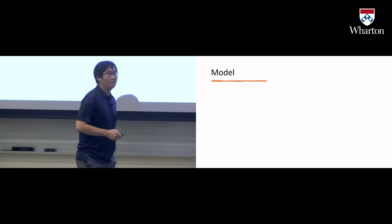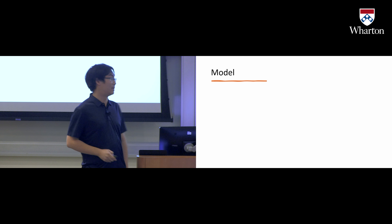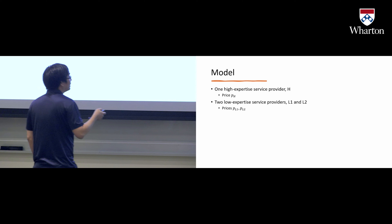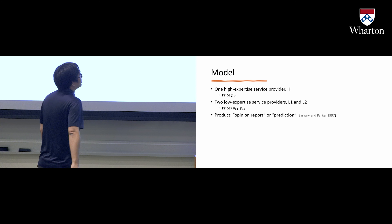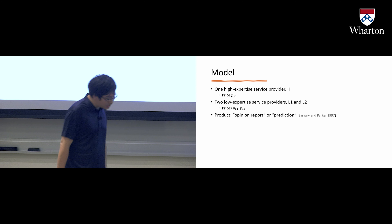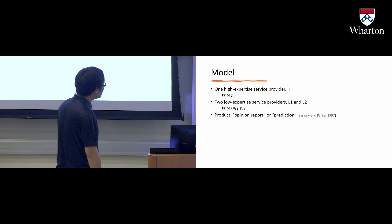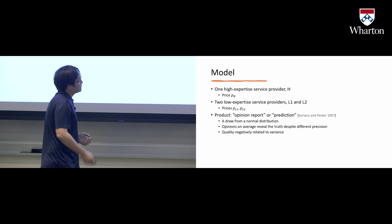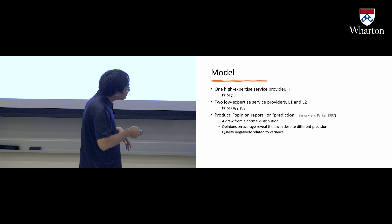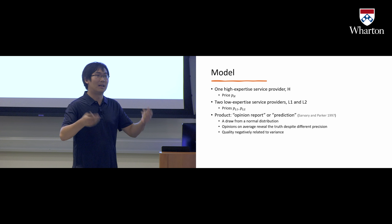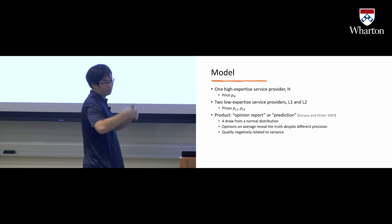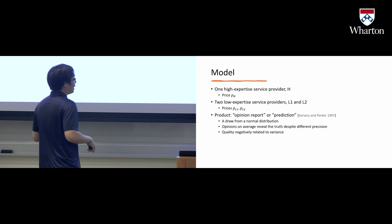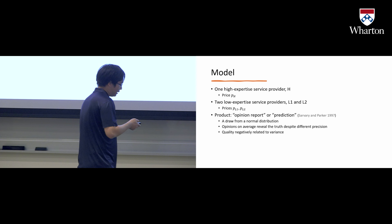Let me quickly introduce our model to show the impact of such homogenization. We assume there is one high-expertise service provider whose quality is Q_H and price is p_H, and two low-quality or low-expertise service providers whose prices are p_L1 and p_L2. The product is an opinion report or prediction of the world. Following a paper by Savary and Parker, we assume the report is a random draw from a normal distribution, and opinions are correct on average. Quality is negatively related to variance — quality Q_H equals one minus sigma_0 squared, and the lower quality Q_L equals one minus sigma squared, where higher quality has lower variance.